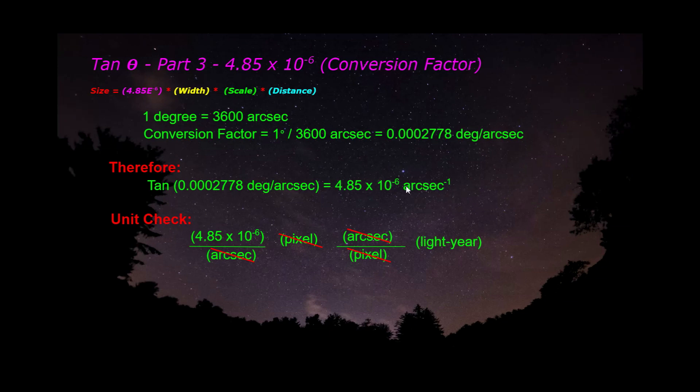1 over arc seconds or arc seconds to the negative 1. Now this is where my math may be a little fuzzy, but I believe the degrees end up going away when you take the tangent of that and you're left with 1 over arc seconds. Okay, so if that's the case, we can do a unit check. We've got our conversion factor, 4.85 over arc seconds. That's our conversion factor term up here. The width, which was in pixels, the scale, which was in arc seconds per pixels, and the distance, which was in light years, those units end up canceling out. Arc seconds can be canceled out, pixels can be canceled out, and hot dog, you're left with light years, which is the unit you wanted.